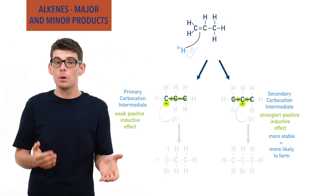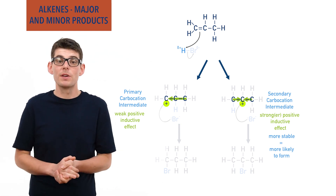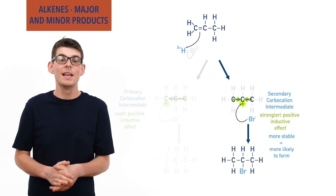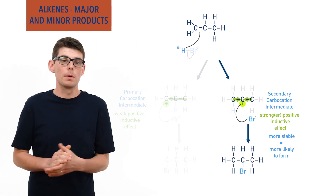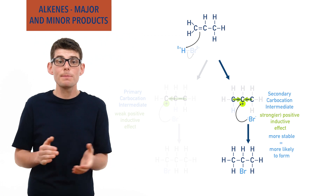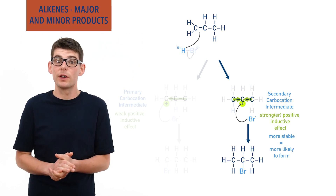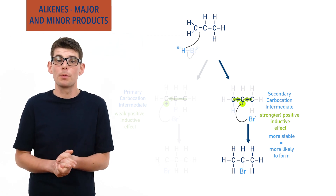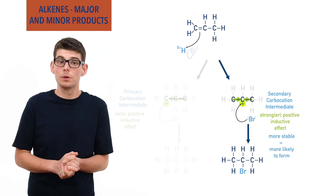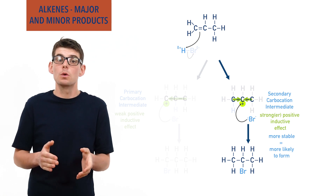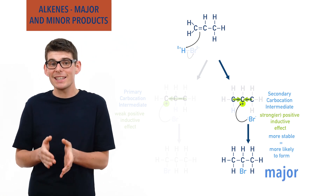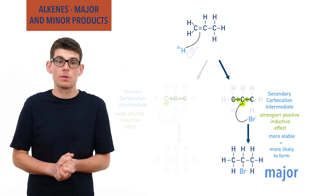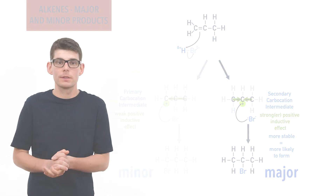Following step 2 of the mechanism, this would therefore produce more 2-bromopropane than 1-bromopropane. There will still be both products in the final reaction mixture — it's just that more 2-bromopropane will be produced, meaning we call it the major product, and less 1-bromopropane will be produced, so we call it the minor product.